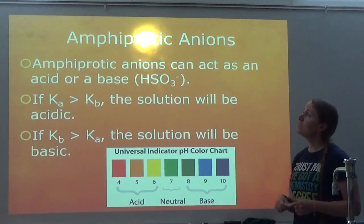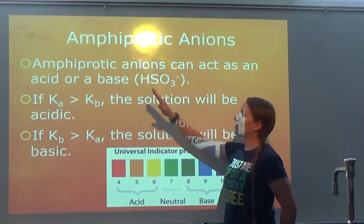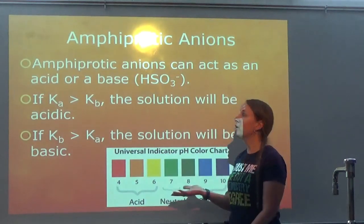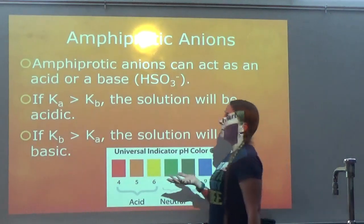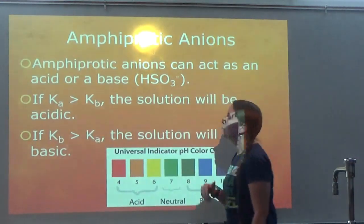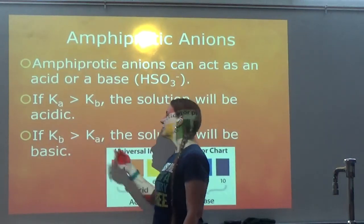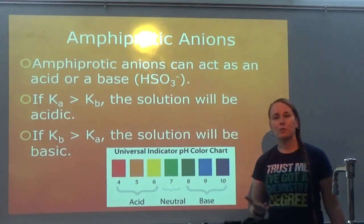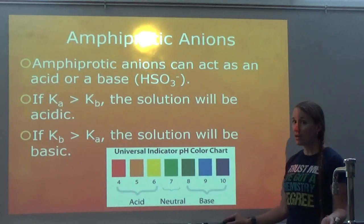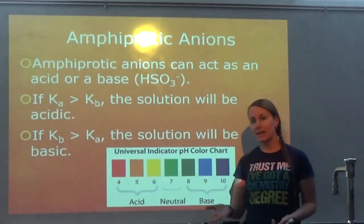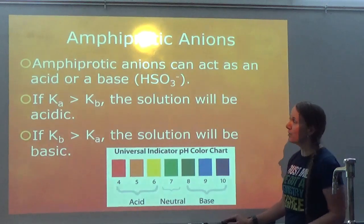Amphiprotic anions can act as an acid or a base. For example, HSO₃⁻ — is it going to lose the hydrogen or gain the hydrogen? We don't know. What you have to do is compare your Ka and Kb. If Ka is larger than Kb, it will end up forming an acidic solution. If Kb is larger than Ka, it will end up forming a basic solution. If you only know one of them, remember Ka times Kb equals 1×10⁻¹⁴, so we can calculate the other one.